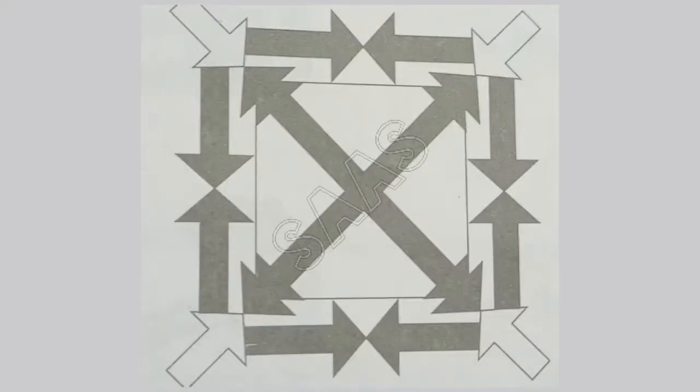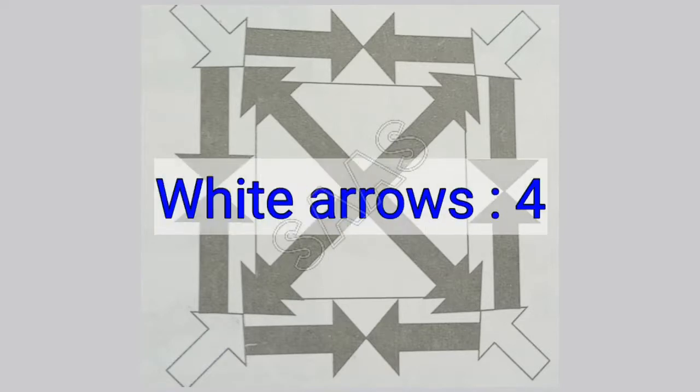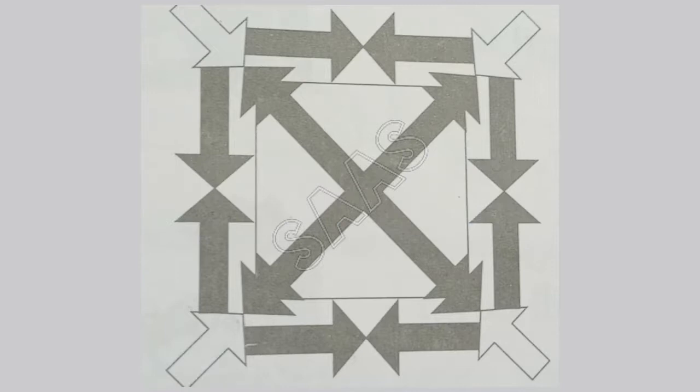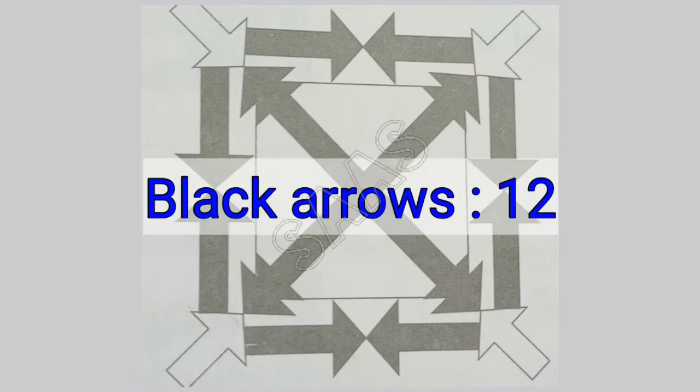Can you count the number of white and black arrows in the given picture? Let's start counting. Total number of white arrows are 4. Let's start counting the black arrows. There are 12 black arrows in total. I'll see you next time.